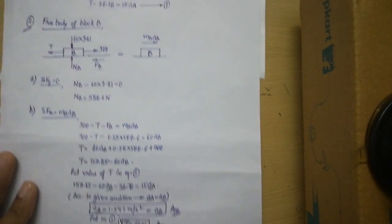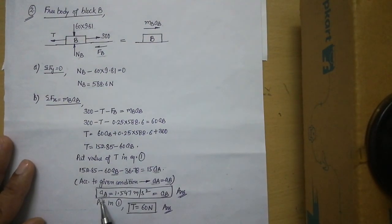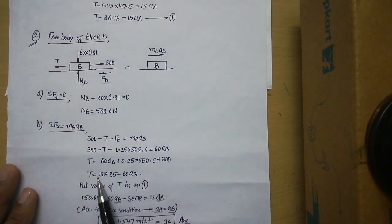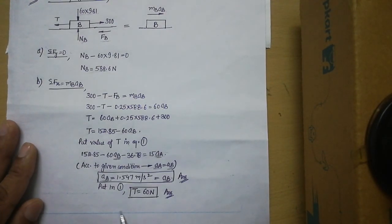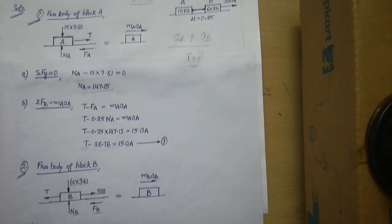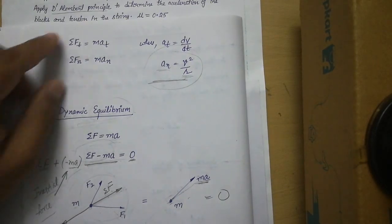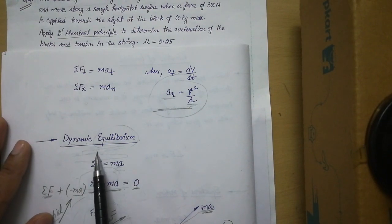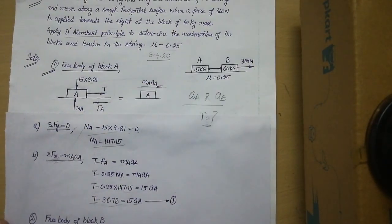Once we have the acceleration values, we can find the tension in the string by substituting the acceleration back into either equation, giving a tension value of 16 N. D'Alembert's principle is simply dynamic equilibrium — don't get confused by the term. Thank you very much.